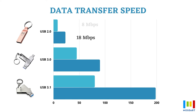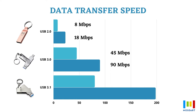On the other hand, USB 3.0 has a writing speed of 45 megabits per second and a reading speed of 90 megabits per second. But USB 3.1 gives a huge writing speed of 80 megabits per second and a reading speed of 180 megabits per second, where it stands as the fastest USB flash drive available in the market today.